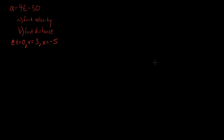Up until now, we've seen expressions for distance x, and we've been asked to find the velocity and the acceleration based on these expressions. In this example, we're going to be given an expression for acceleration: a is equal to 4t minus 30, and we're going to find the velocity and the distance based on this expression. One other piece of information we're given is, at time equal to 0, our velocity is equal to 3 meters per second, and our distance is minus 5 meters.